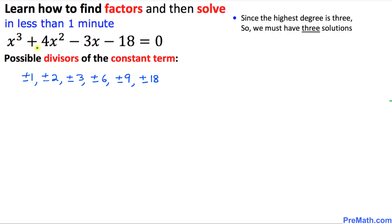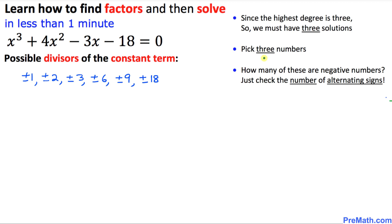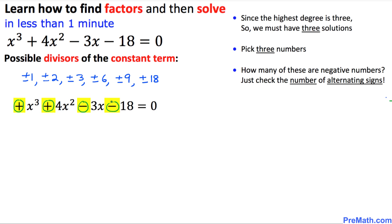The highest degree is 3, so we are going to have three solutions, meaning we pick three appropriate numbers from these possible divisors. Now, how many of those three numbers are going to be negative? Let's focus on the highlighted signs: positive, positive, negative, negative.